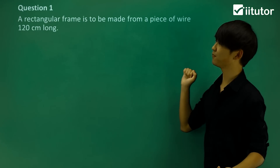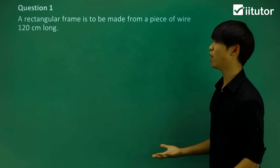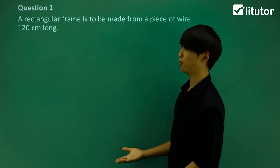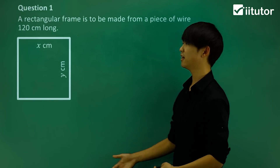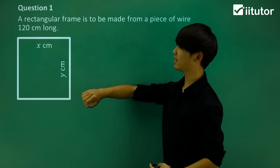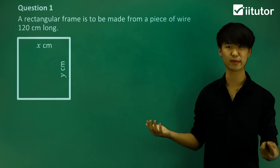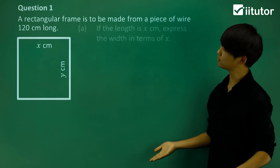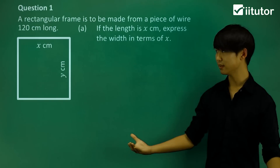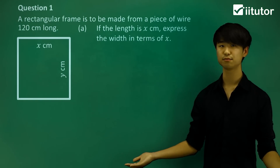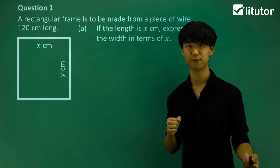In question one, we have a rectangular frame to be made from a piece of wire 120 centimeters long. If I draw a diagram, we have a rectangular frame. Let's call the length x and the width y centimeters. Now, if the length is x centimeters, we need to express the width also in terms of x — so instead of y, let's represent that width in terms of x.